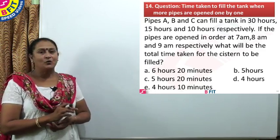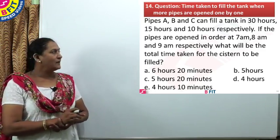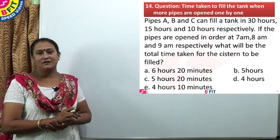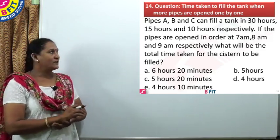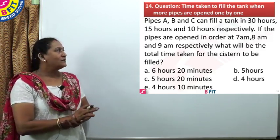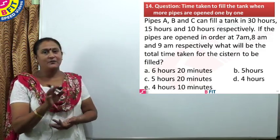If the pipes are opened in order at 7am, 8am and 9am respectively, what will be the total time taken for the cistern to be filled? In this question, we have more than 2 taps, we have 3 taps. We can find LCM for time taken and that LCM is assumed capacity and proceed.